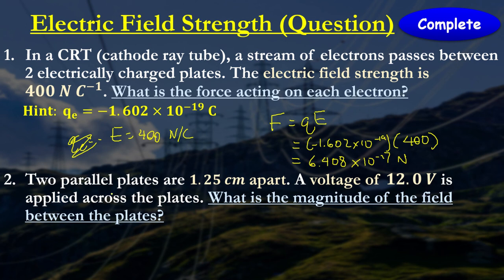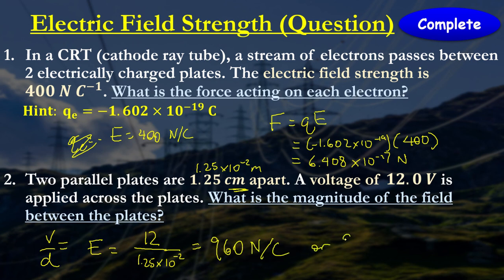The next one we have, it says two parallel plates, 1.25 centimetres apart, which is 1.25 times 10 to the minus 2 metres. We have a voltage of 12. What's the magnitude of the field? If we're talking about magnitude, we're trying to find the electric field strength. The voltage is 12, so we're basing it off this formula here, E equals V over d. The distance is 1.25 times 10 to the minus 2. And that's roughly 960 newtons per coulomb, or you can write it as 960 volts per metre.